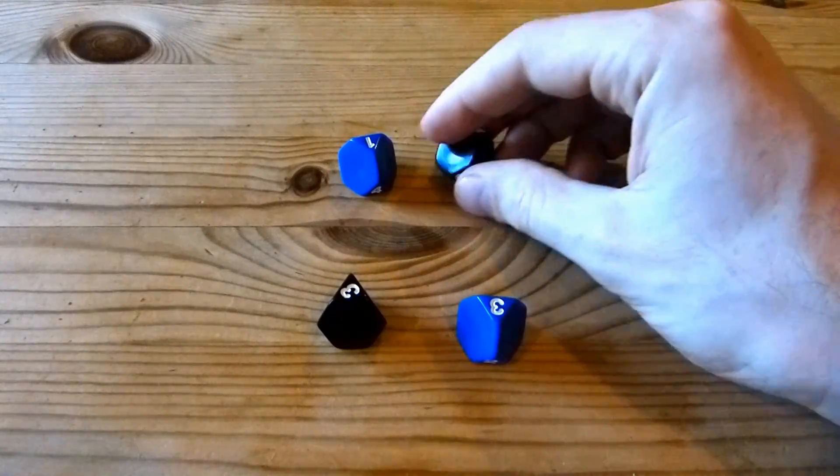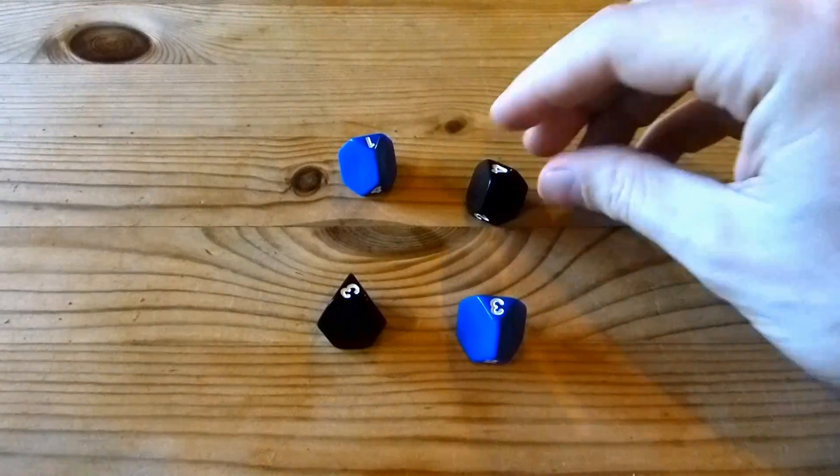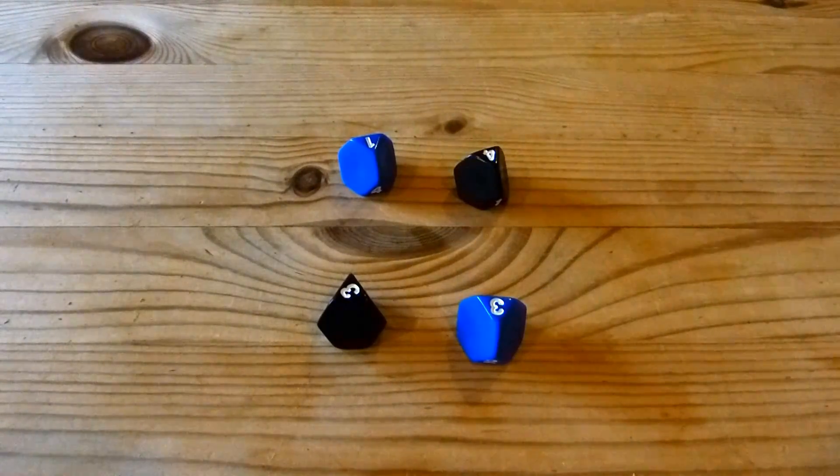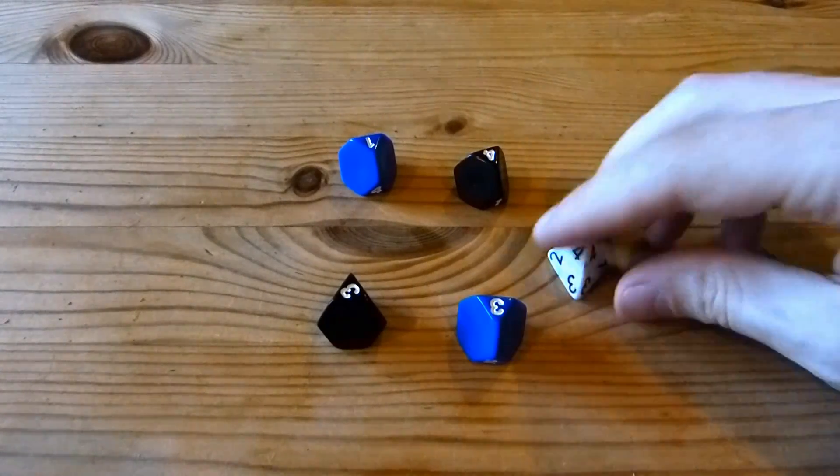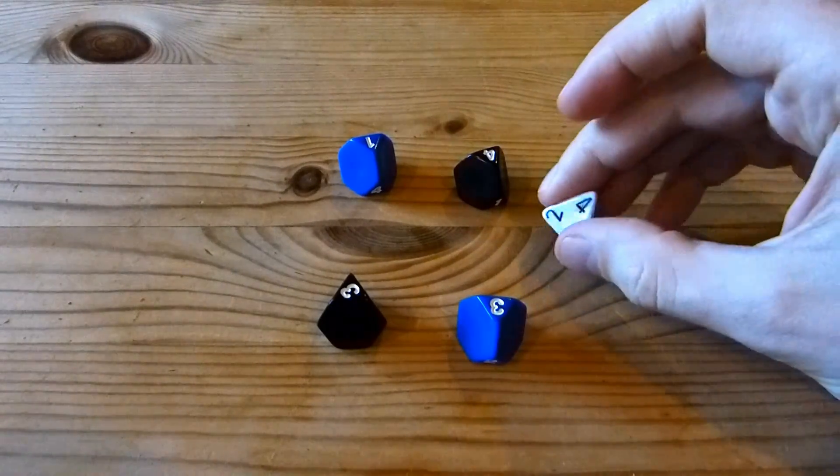It's also easier to pick up because it has these little triangles on the bottom that you can grip hold of. Whereas the usual D4, you just have to use friction, you can't get a finger underneath it.